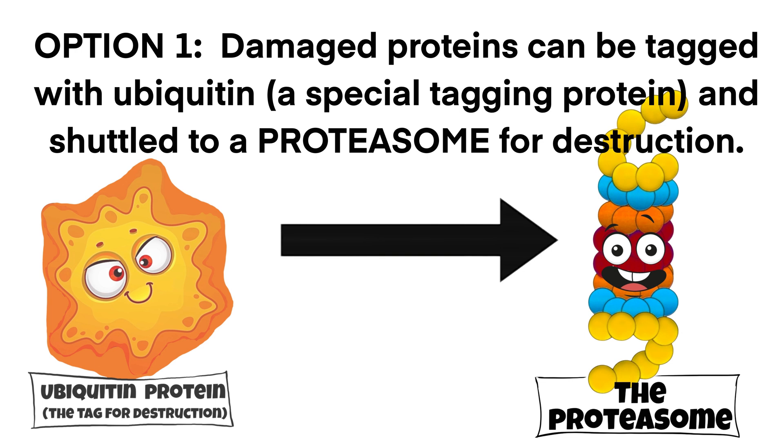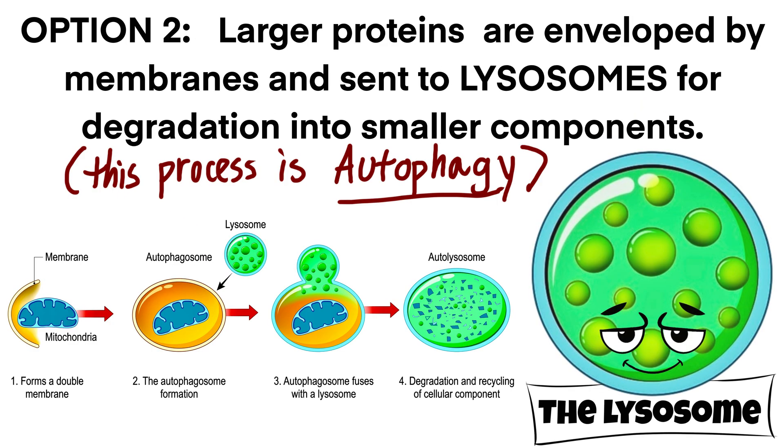Damaged proteins can be tagged with ubiquitin, which is a special tagging protein, and shuttled to a proteasome for destruction. Alternatively, larger proteins and organelles are enveloped by membranes and sent to lysosomes for degradation into smaller components.